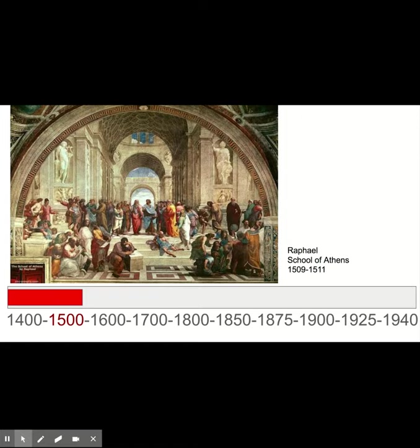At that time, harmony, balance, and order were a very important part of society, and it's represented in artists' compositions — how they lay things out — and in the development of the technique of linear perspective, using a vanishing point to help develop scenes of architecture.